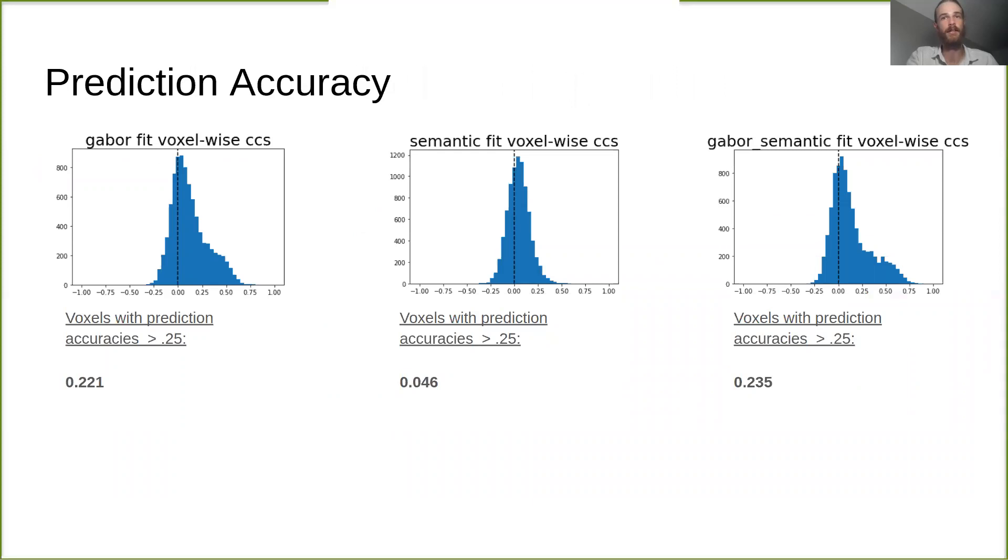As you can see here, our Gabor features predicted well in a decent number of voxels, and while the semantic model performed comparatively worse, there are still a number of voxels that seem to be predicted above chance.